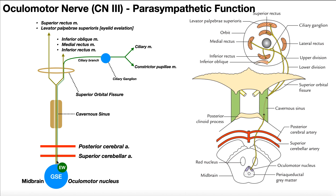As the oculomotor nerve travels anteriorly from the midbrain, remember that even though I have them drawn separately, the parasympathetic part is going exactly with the somatic part. Going anteriorly, we cross two arteries: the oculomotor nerve goes over the superior cerebellar artery and then underneath the posterior cerebral artery. From there, it continues anteriorly and enters a tunnel within the sphenoid bone called the cavernous sinus, and travels through it.